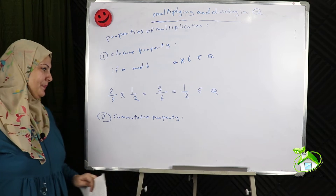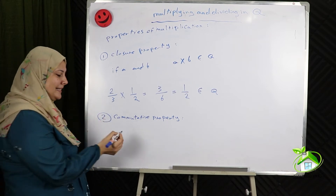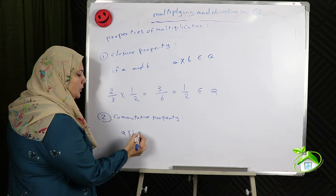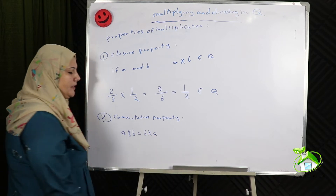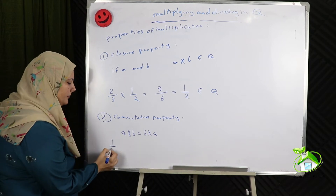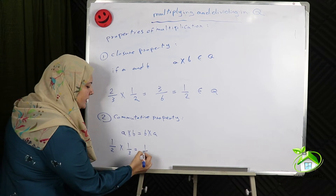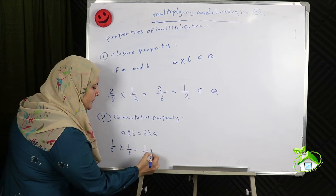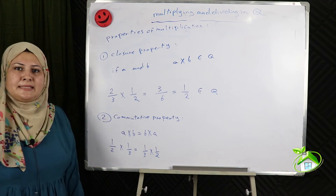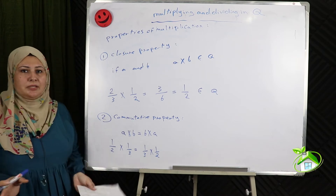Commutative property: if A and B are two rational numbers, then A times B equals B times A. For example, 1 half times 1 third equals 1 third times 1 half. If we replace the places of the two numbers, the result doesn't change.